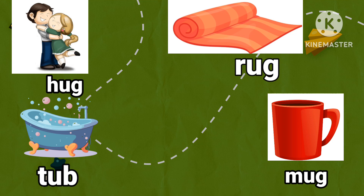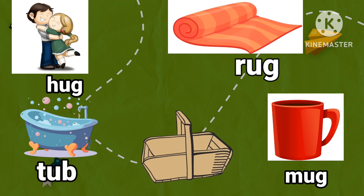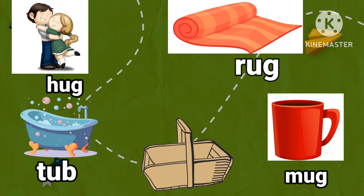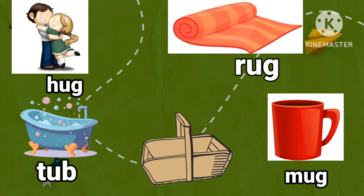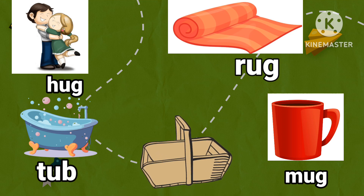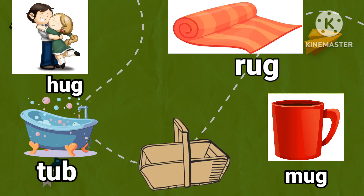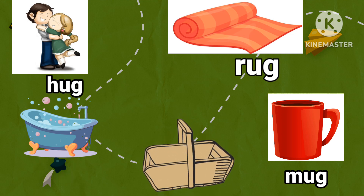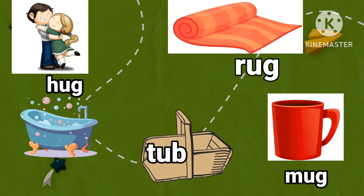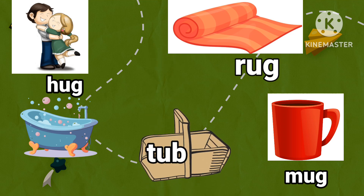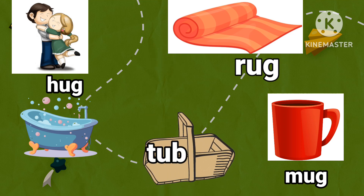Next. Hug, tub, rug, mug. Pick out the word that does not rhyme in the group. Pick up the word tub and drop it in the basket.